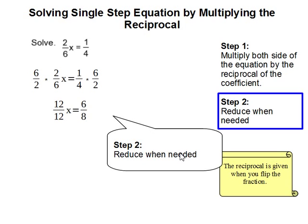Step 2, reduce when needed. So 6 times 2 is 12 and 2 times 6 is 12. 1 times 6 is 6. 4 times 2 is 8. And now we reduce.